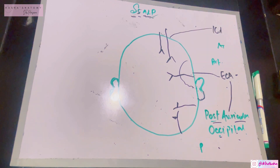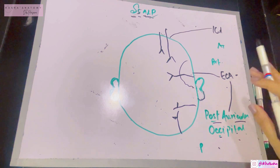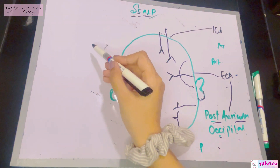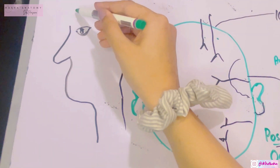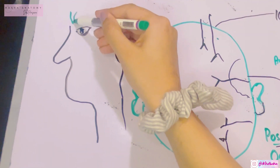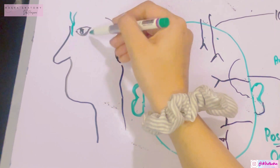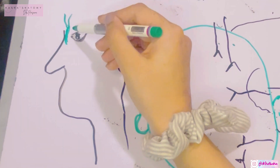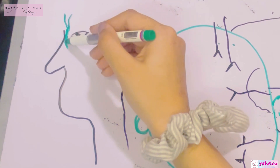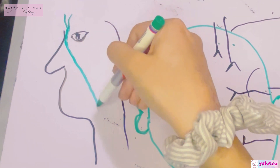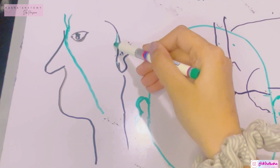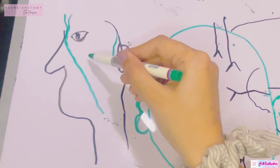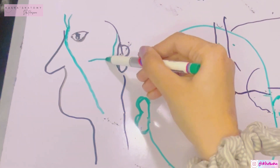The scalp is very rich in its vascular supply. The veins are similarly named to the arteries. The supratrochlear and supraorbital veins unite at the medial angle of the orbit to form the angular vein, which continues as the facial vein.